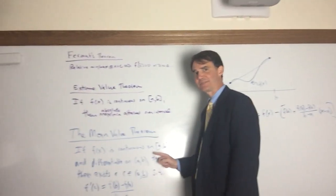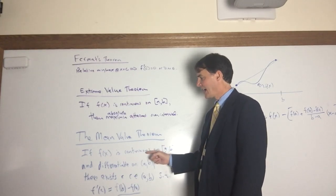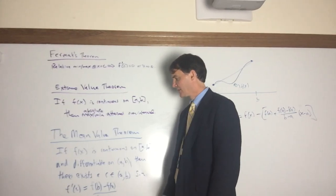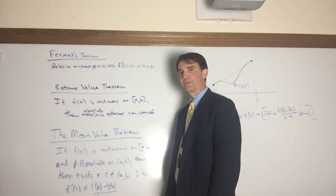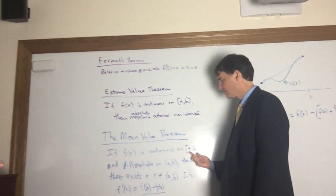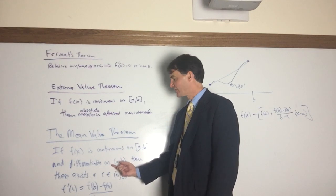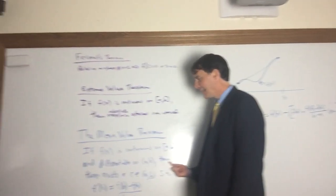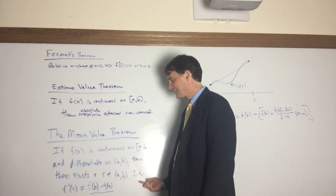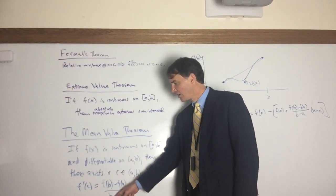The Mean Value Theorem says something new and takes a little longer to describe. I'm going to give the hypothesis, the if part, in technically correct language which is obscured a bit in your book, but just work with me. If f(x) is continuous on the closed interval [a,b] and differentiable on (a,b), then there exists a c between a and b such that f'(c) equals [f(b) - f(a)]/(b - a).